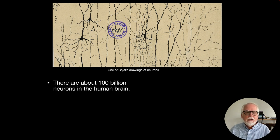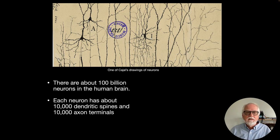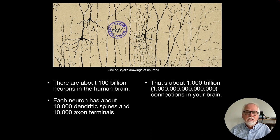What do we know about neurons? There are about 100 billion neurons in the human brain. Each neuron has about 10,000 dendritic spines, meaning at the receiving end there are 10,000 different little bits sticking out that could collect information from nearby neurons. On the other end, where the neuron releases information to the next neuron, there could be up to 10,000 axon terminals. When you think about all these neurons together, that means you could have about 1,000 trillion — a quadrillion — connections in the brain.